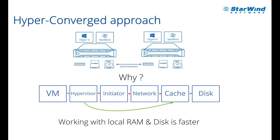With Starwind and local resources, we effectively jump from the hypervisor right into the cache — which is the local RAM of the server where your virtual machine is running, or the SSDs installed in that same server. That's much faster than any type of storage network. It can compete with 100 gigabit Ethernet, but we're not talking about 100 gigabit Ethernet prices here. That's the main reason we chose this approach. The second reason is, of course, flexibility and ease of use.